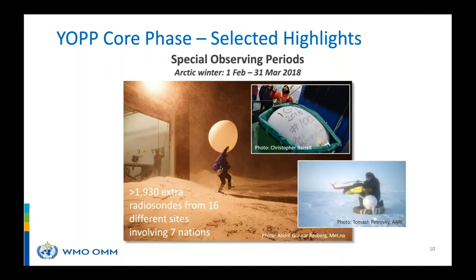Another highlight is the special observing periods. During certain periods in the Arctic and Antarctic, we tried as much as possible to fill the observational gap so striking in polar regions. The first was the winter SOP from February 1 to March 31, 2018, with almost 2,000 extra radiosondes from 16 sites involving seven nations, plus buoys and special observational campaigns. A comparable summer SOP followed in 2018, as did a very successful Southern Hemisphere summer season SOP.